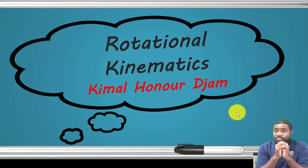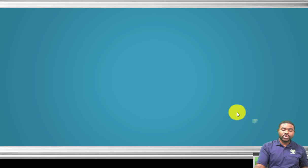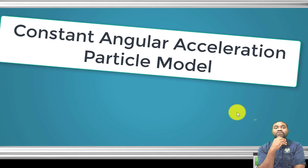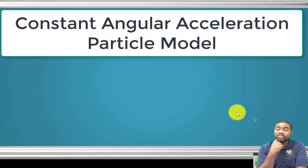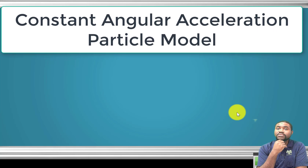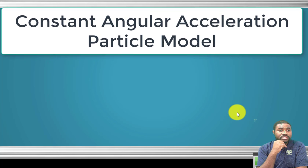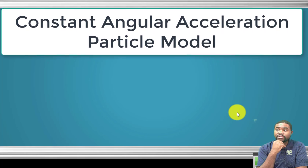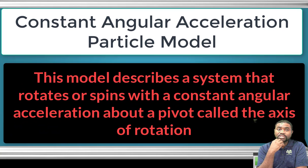Welcome to this new unit: rotational kinematics. Today we will look at the constant angular acceleration particle model. This model describes an object that rotates or spins with a constant angular velocity.